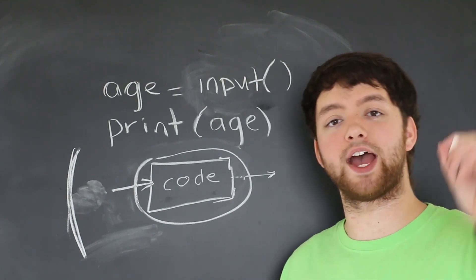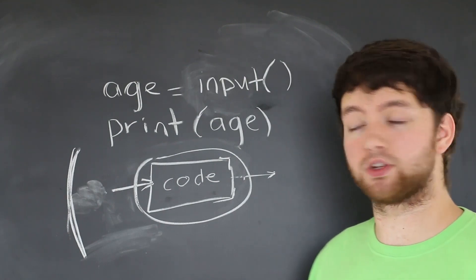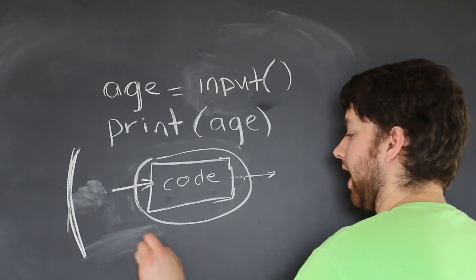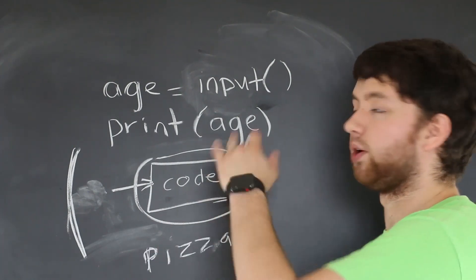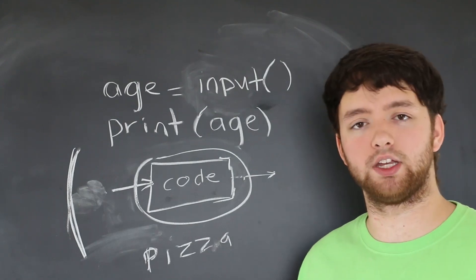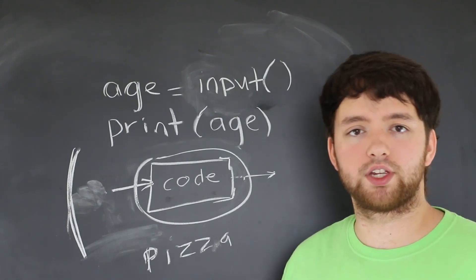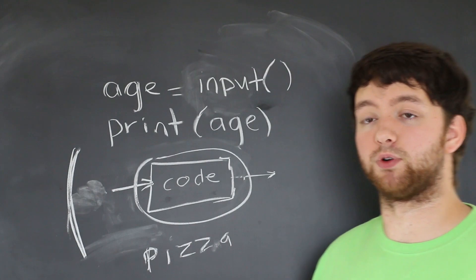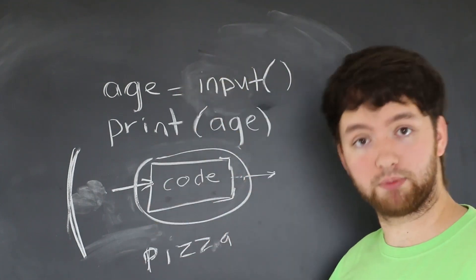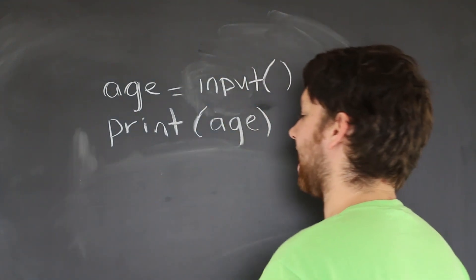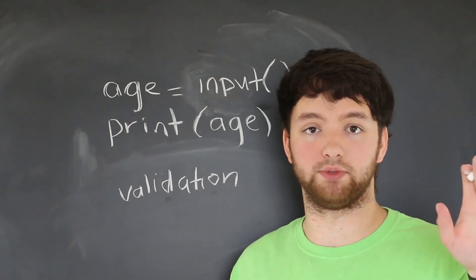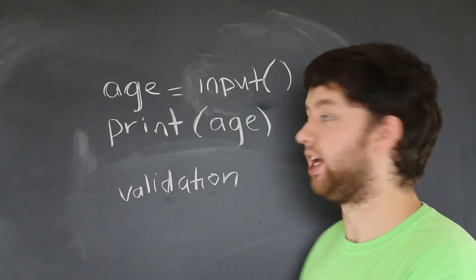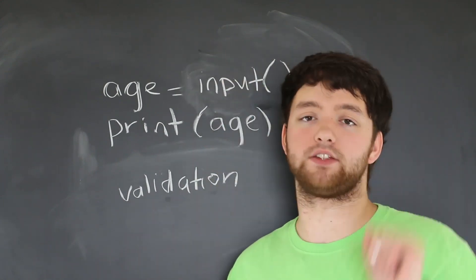The problem with generalizing, though, is that we have to worry about incorrect values. For example, what if someone put the age pizza? Well, that is not a number, and it's not going to make our application work correctly. So this gives us unpredictable results. It makes things challenging, especially if we're expecting a number and we get something like pizza. Because of this, you need to do validation. Validation is a process to see if a value given is possibly correct, or if it's garbage. If it's garbage, then we loop back and ask them for a new input.